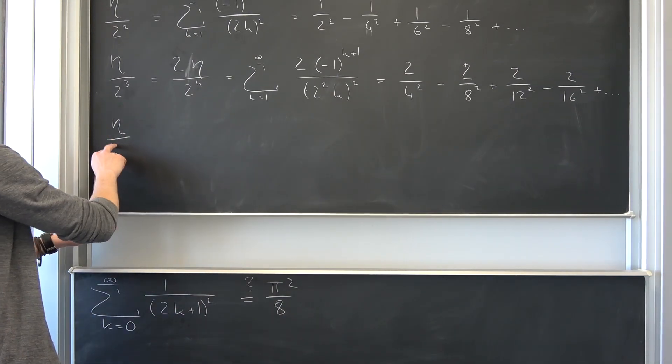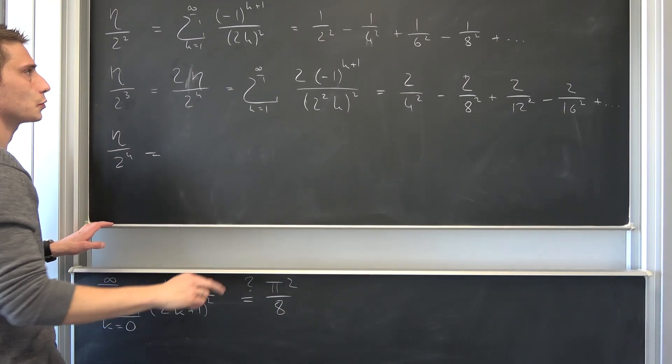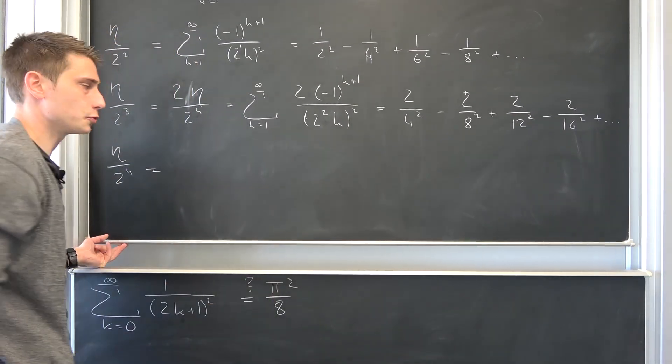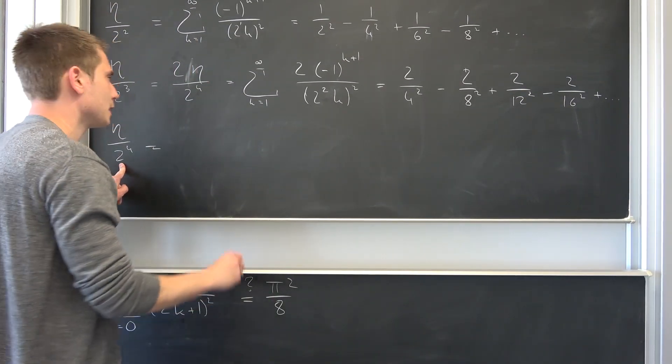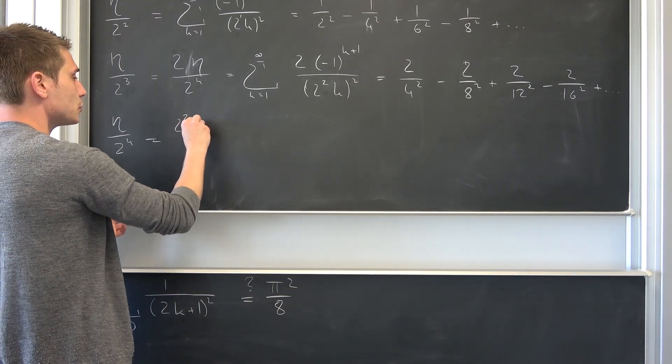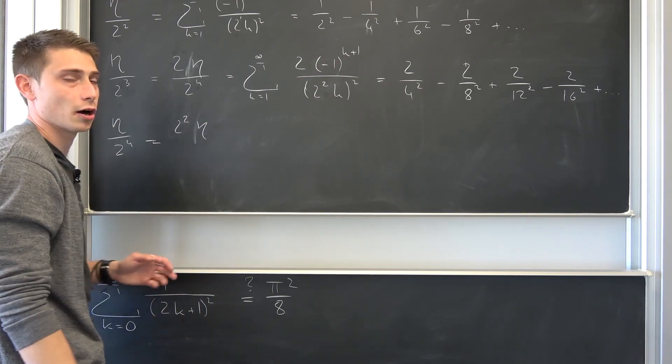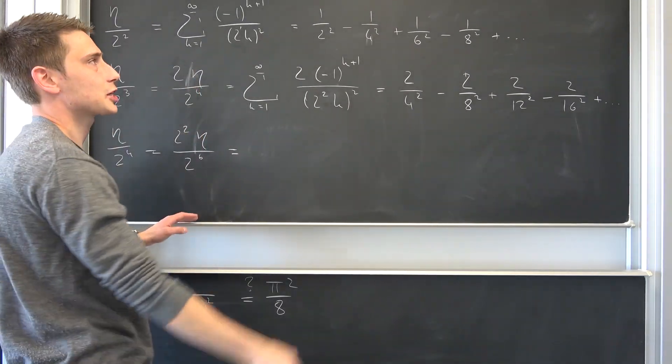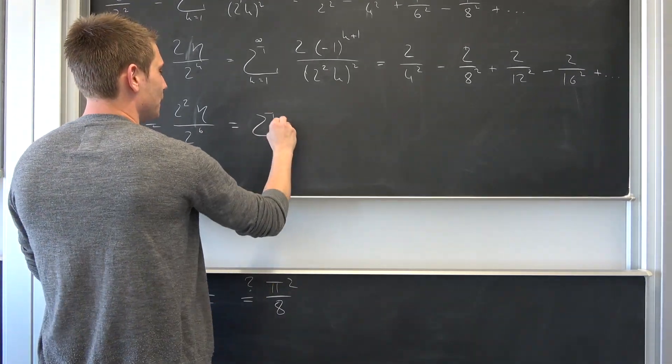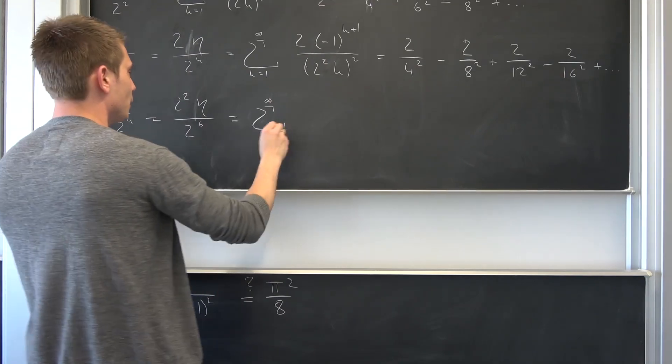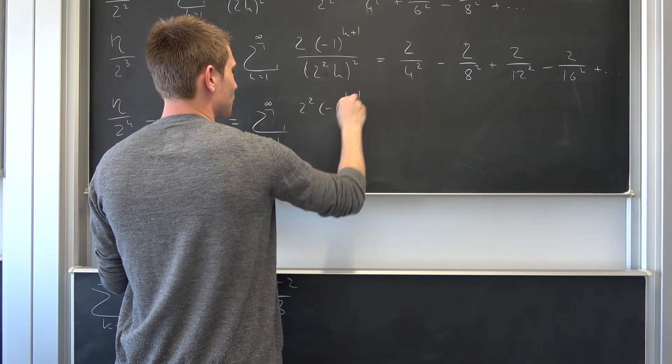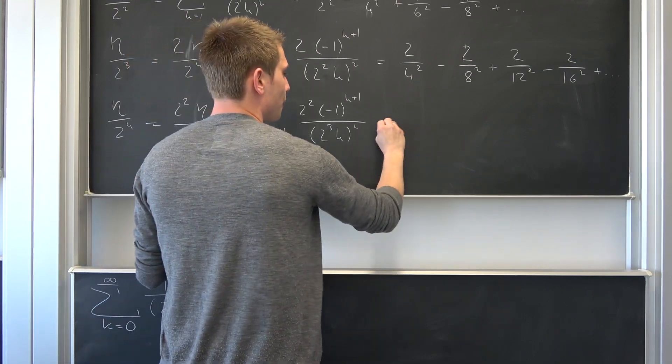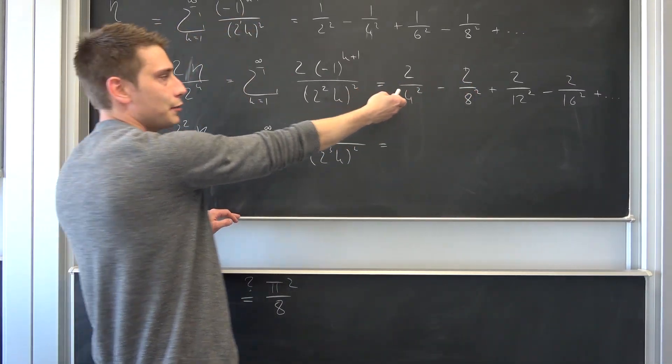Now eta over, you might have guessed, 2 to the 4th power. But what we want to have here is now 2 to the 3rd power, because this was 2 to the 1st power, 2 squared, now we want to have 2 to the 3rd power. But we only have 2 to the 4th power down here, meaning we have to expand this fraction by 2 squared over 2 squared. So 2 squared eta over 2 to the 6th power, evaluating to sum running from k equals 1 to infinity of, now we have 2 squared, negative 1 to the k plus 1 power over 2 to the 6th power is nothing but 2 to the 3rd power times k but squared. Evaluating to